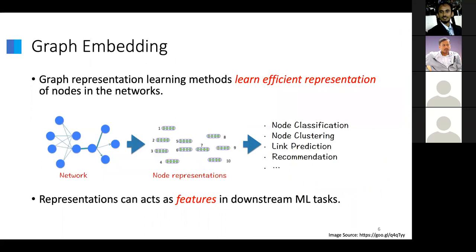What is graph representation learning? In a very brief sense, it is a mechanism or methodology to learn vector representations of graphs. The idea is that you take a network or graph of interest and convert it so that every node, and possibly edges, are represented by a vector representation. The space in which this can be represented can vary, operating on both measures and metrics. But ultimately, once you have it in vector representation, you can use it directly for various downstream machine learning tasks such as classification, clustering, link prediction, and recommendations.